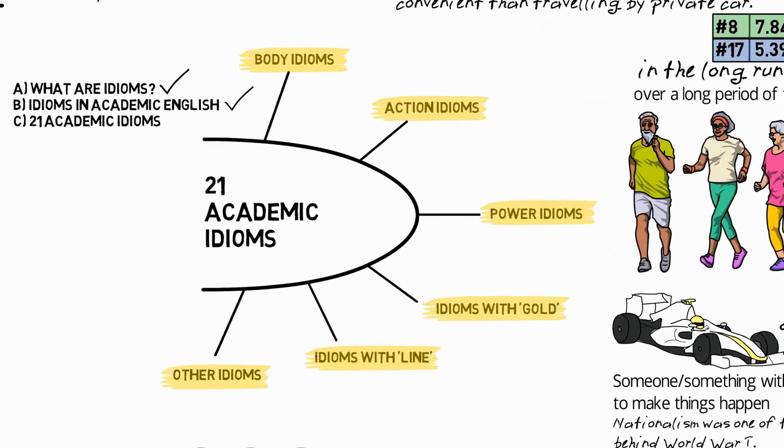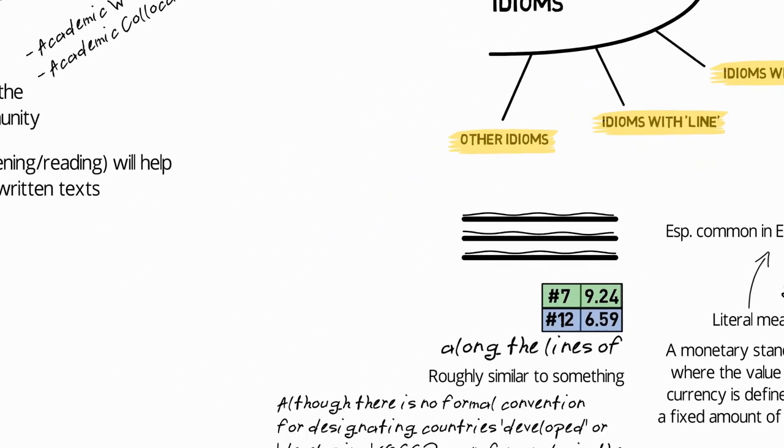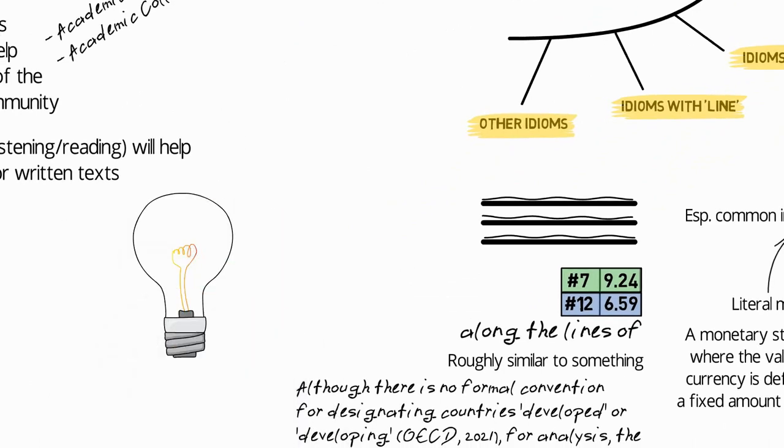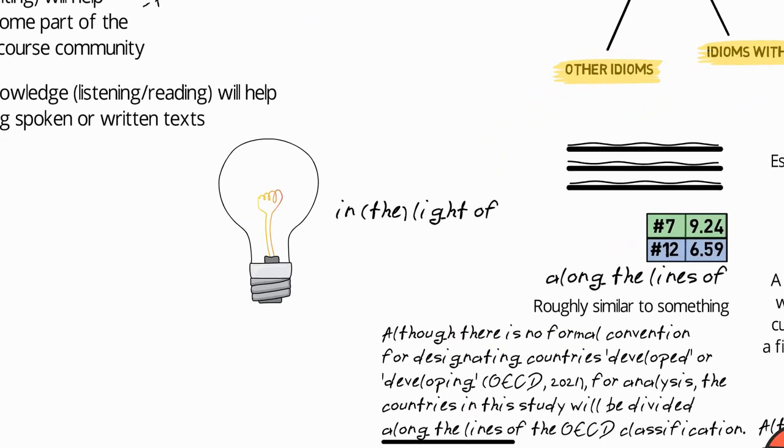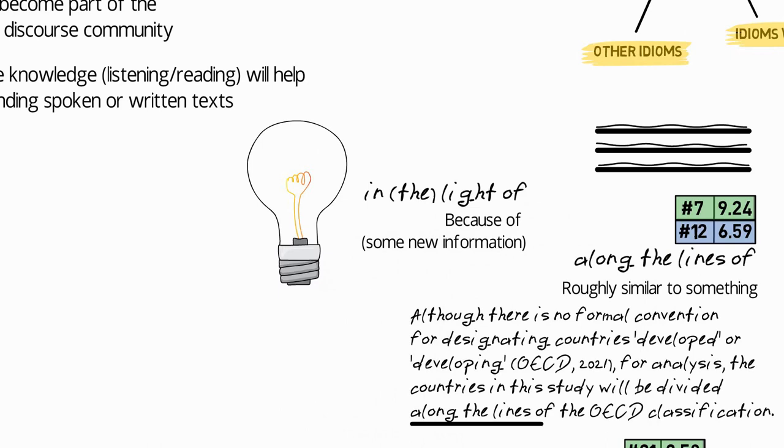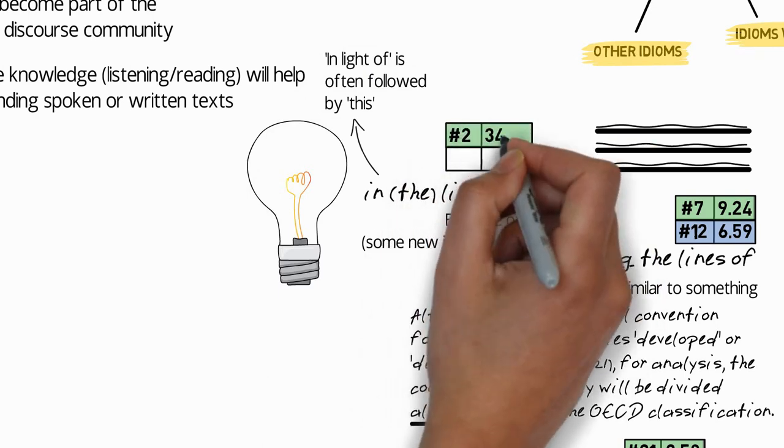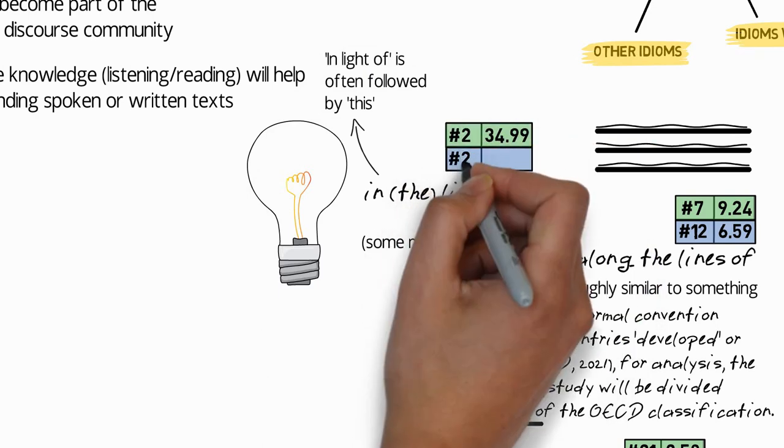So finally, let's look at other idioms. There are four idioms left. The first of these is in light of or in the light of, which means because of, specifically because of some new information. The phrase in light of without the word the is often followed by this, and this is actually the second most frequent idiom for academic English writing.